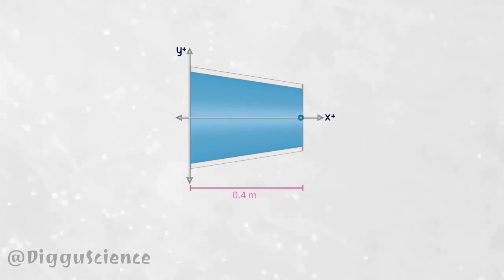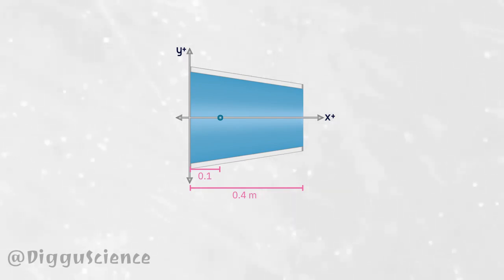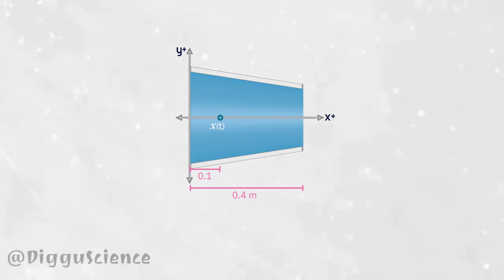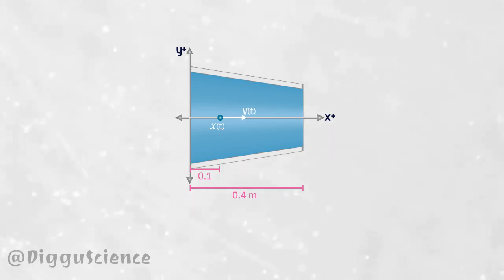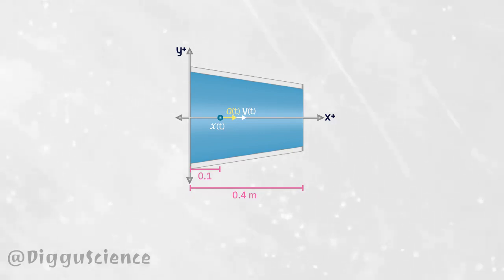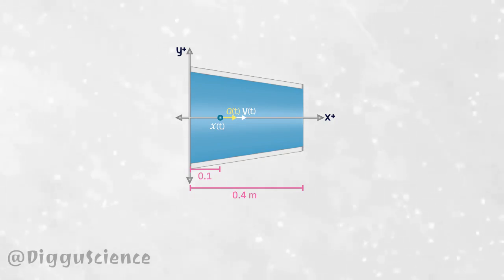We want to calculate the velocity of the fluid particle when the particle reaches a point 0.1 meters from the inlet. To reach this point, the particle needs some time. Mathematically, the position of the particle can be written as x(t), the velocity as v(t), and the acceleration as a(t). We will calculate the time required for the particle to reach 10 centimeters from the inlet, then use that time to get the acceleration.